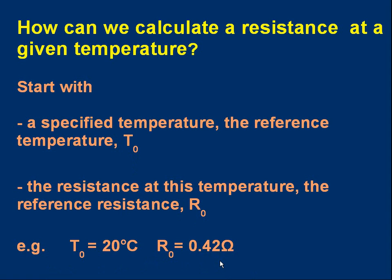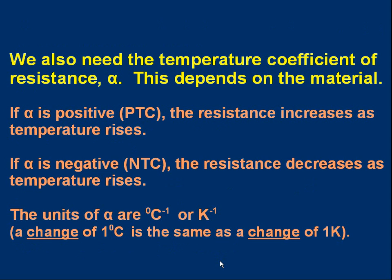So, for example, we could write something like T₀ is 20 degrees C. That's the reference temperature. And R₀ is 0.42 ohms. So, we've got something that has a resistance of 0.42 ohms at 20 degrees C. We also need some other information. We need what we call the temperature coefficient of resistance. And that's given a symbol, alpha, Greek letter alpha. And this quantity depends on the material we're using. Different materials have different values of temperature coefficient of resistance.